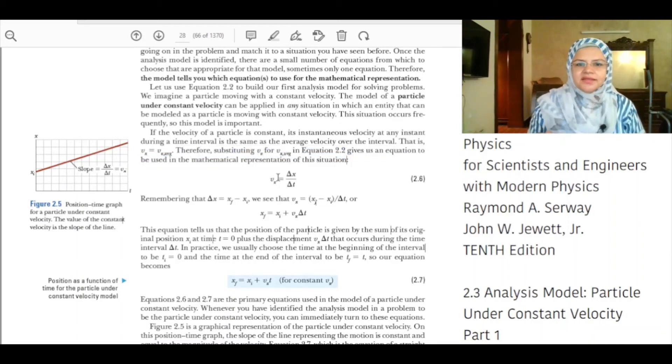Vx is equal to delta x over delta t. Remembering that delta x is equal to xf minus xi, we see that Vx is equal to xf minus xi divided by delta t. Or by rearranging the equation, we get xf is equal to xi plus Vx delta t.